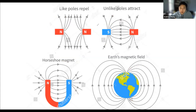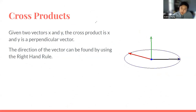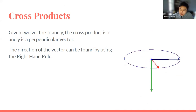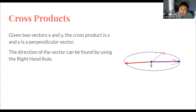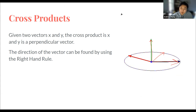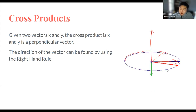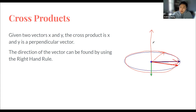Before we talk about how magnetic forces work, we have to talk about cross products, because that's how you find a magnetic force. Basically, if you have two vectors x and y, the cross product gives you a resulting vector. The way cross product works is you take the plane those two vectors are on, and consider the vector perpendicular to that plane — it's a three-dimensional concept. You take the vector perpendicular to that plane, and to find the direction, you use the right-hand rule, which is just a convention that scientists decided on.